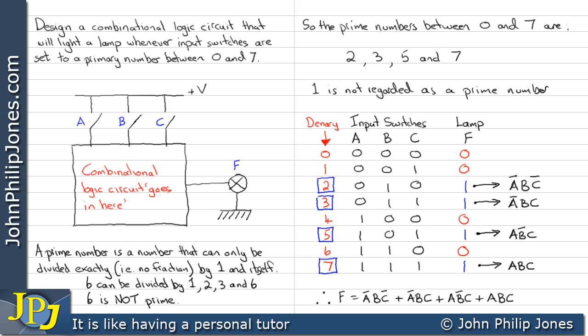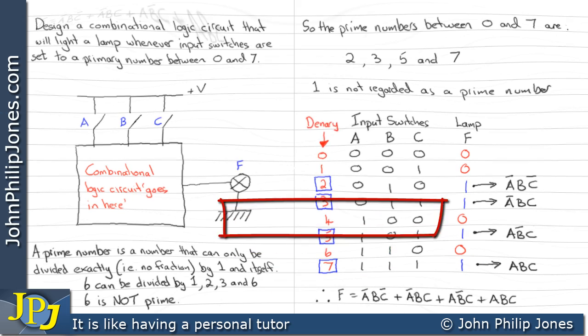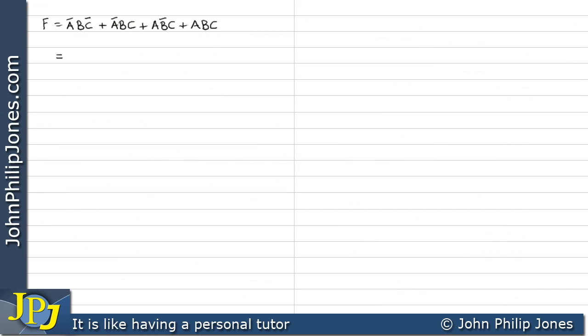The thing to do now is to take this sum of min terms and minimize as you can see here. Well I can see I've got the not A and the B in common to the first two terms. So I'll take those outside of the brackets leaving inside the not C or the C. And I can have a look at the remaining two terms and I can see they have A and C in common. So I'll take those outside the brackets and leave B or not B in the brackets.